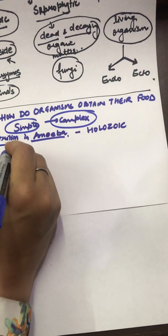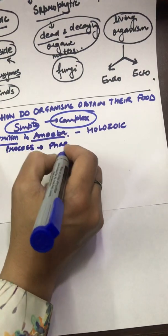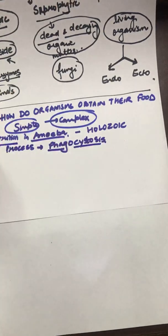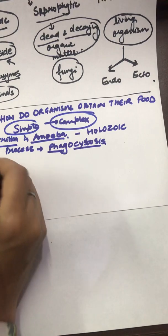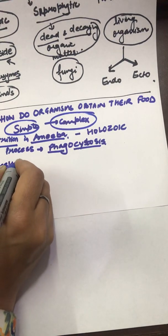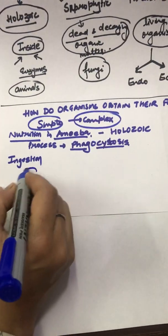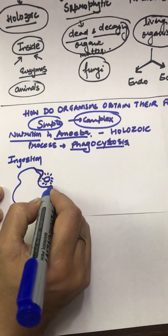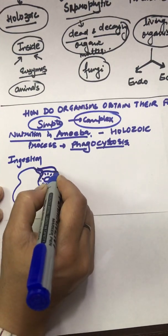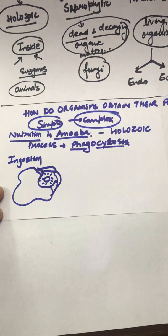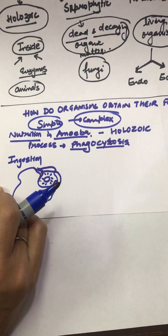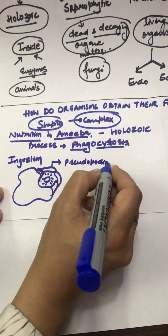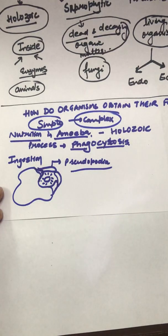The process of phagocytosis involves ingestion, which is the intake of food. Ingestion is when the amoeboid body welcomes the food particle by extending its pseudopodia — these false finger-like projections — and covering the food particle entirely. Pseudopodia are temporary processes which help in locomotion and food capturing.